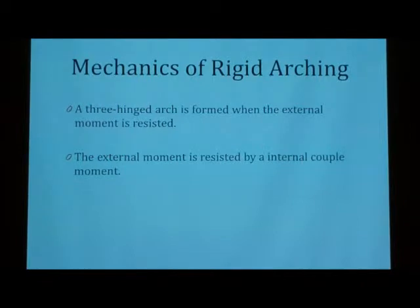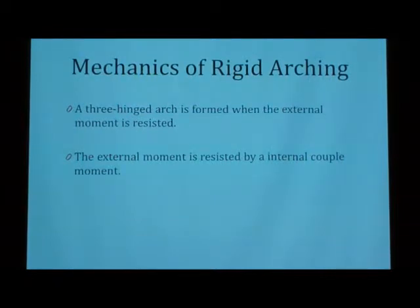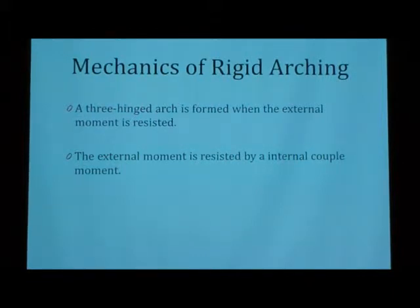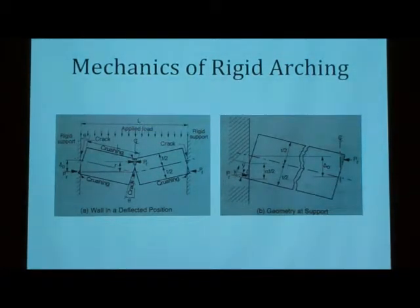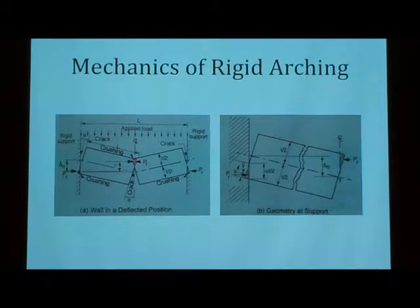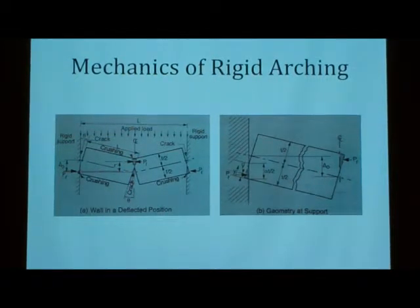So, the three-hinged arch, like I said, is formed when the horizontal thrust is resisted, causing that arch, or at least causing it to crack. So, it develops a moment and it has a lever arm as well, causing the internal action. And right here is a picture of it. As you have the clamp where it cracks, you have that moment resisted right there by that force and that lever arm, due to the lateral load. And right there is the clamping force, which has resisted the thrust of the arch.